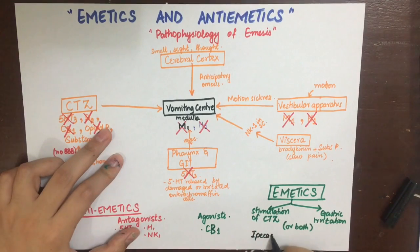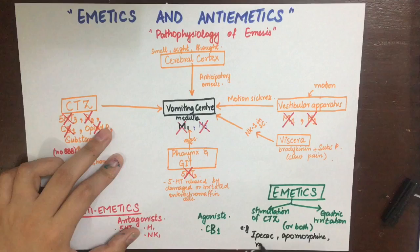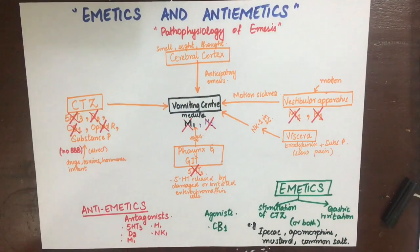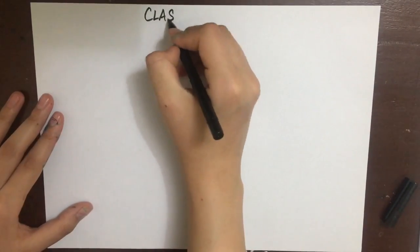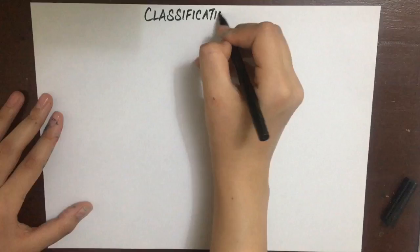The most commonly used emetics are ipecac syrup, mustard, common salt, and subcutaneous apomorphine. There are some contraindications: not to give to unconscious patients as they can aspirate gastric contents, corrosive or caustic alkali patients should not be given emetics, CNS stimulant intoxication should not be managed with emetics as they will cause seizures, and also not give to kerosene poisoning patients.